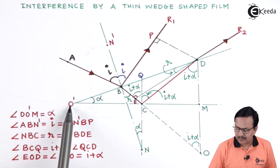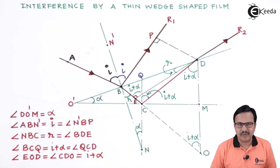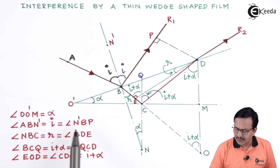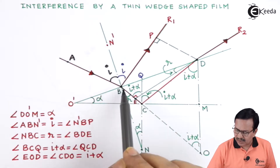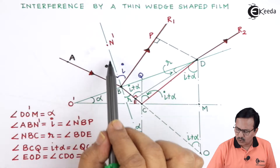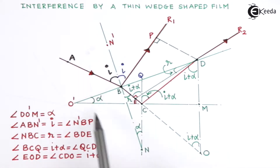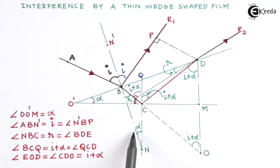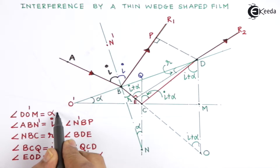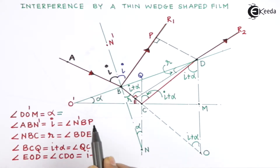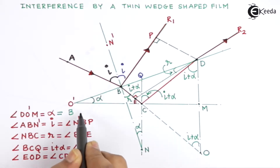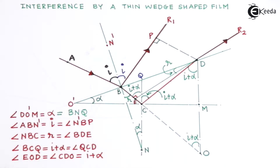Angle DO'M is the wedge angle alpha. The angle between the two normals — the normal drawn to the top surface and the normal drawn to the bottom surface — will also be equal to alpha. So the angle BNQ is also going to be equal to alpha.